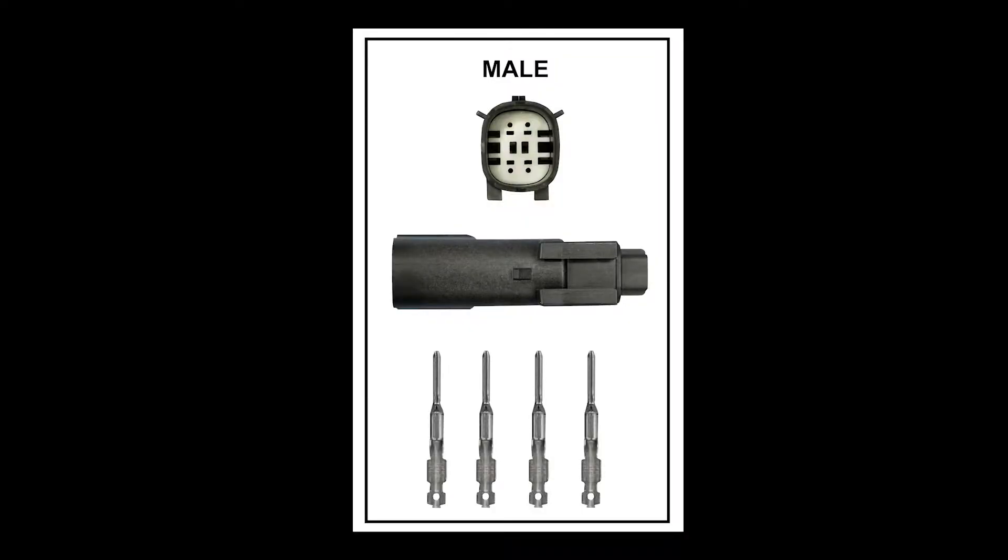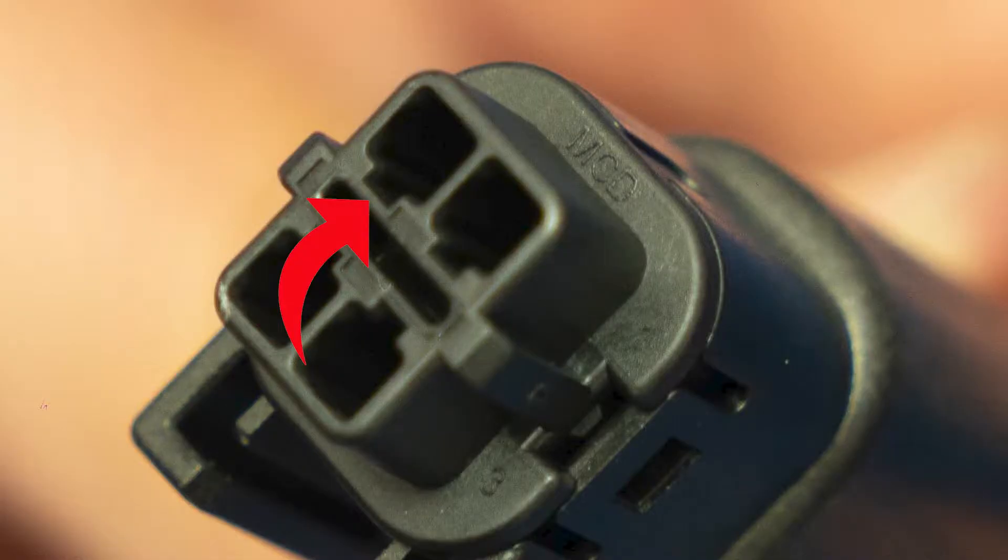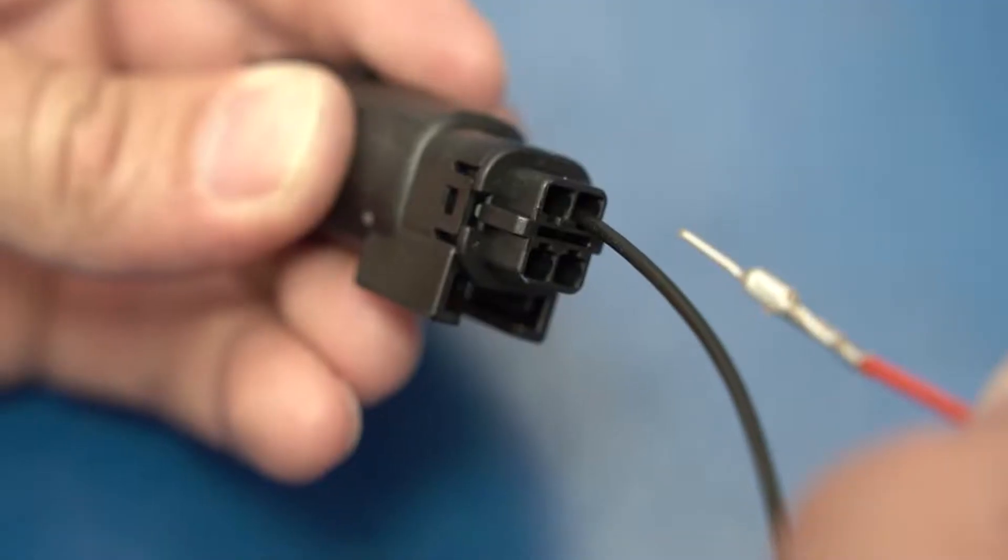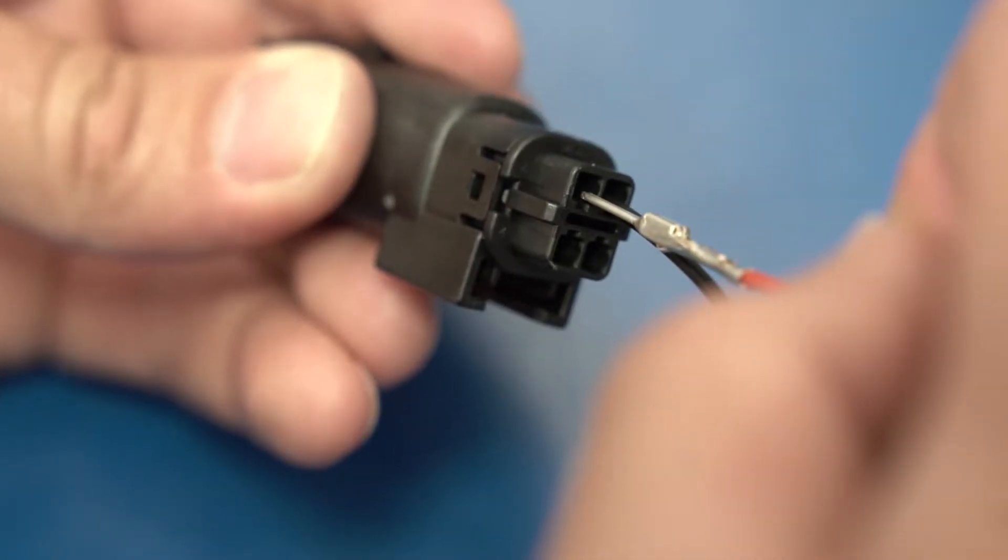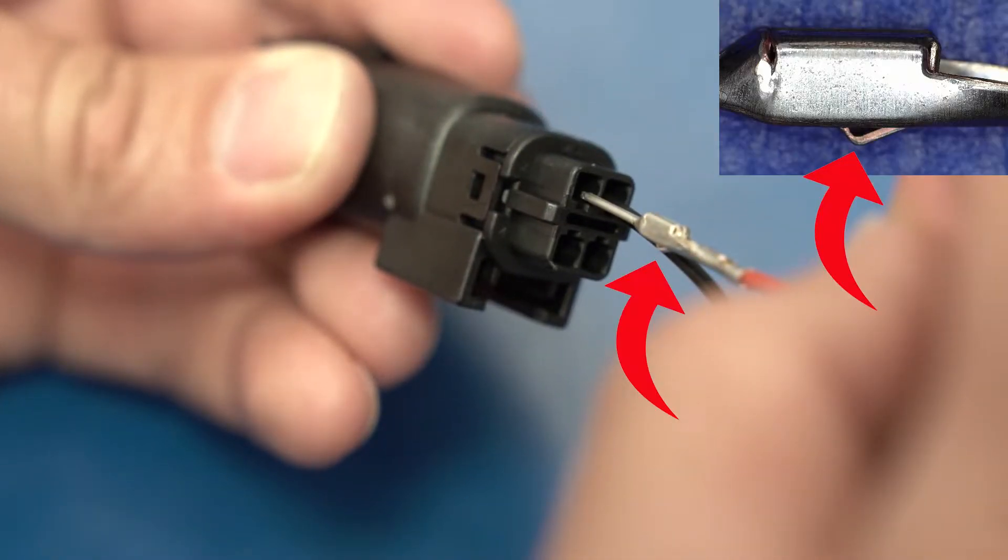Now from the male side of the kit we're going to grab the connector. Note that all four slots are facing inward. Place the first male socket into the connector. Make sure that the triangle latches and is inward facing.